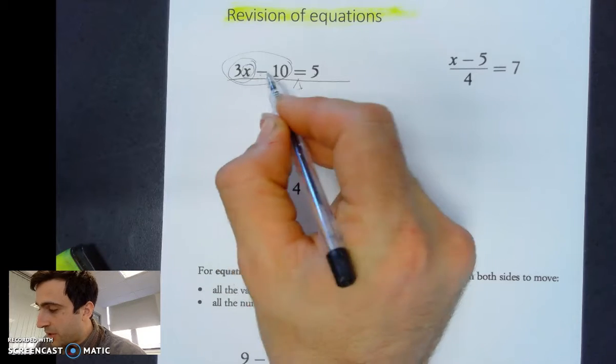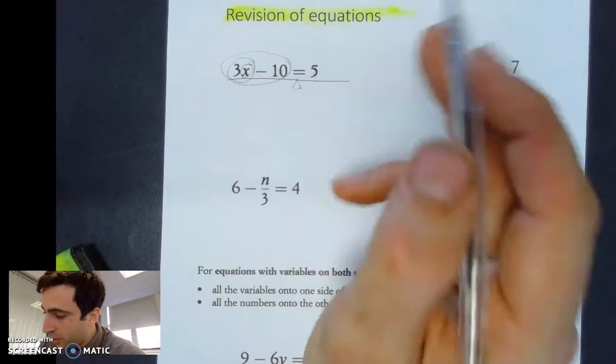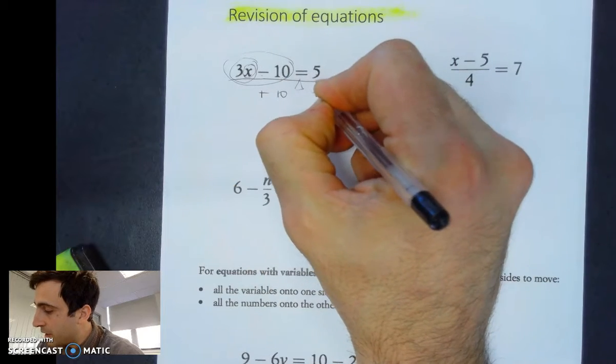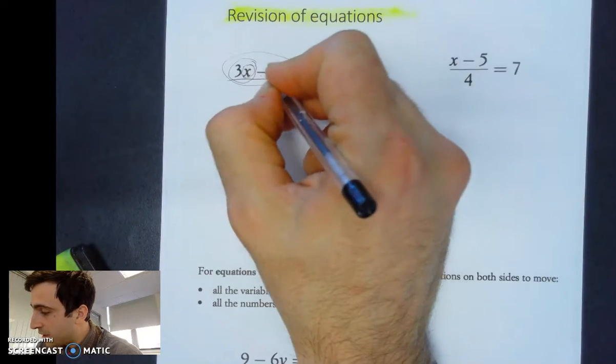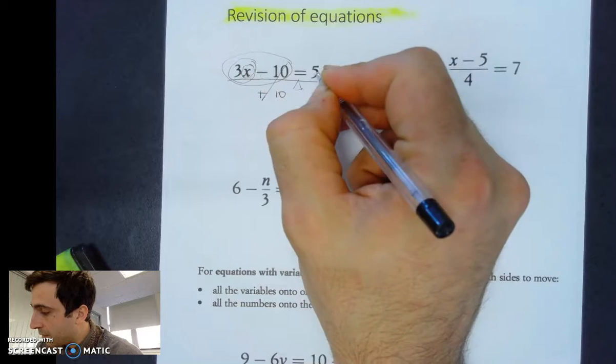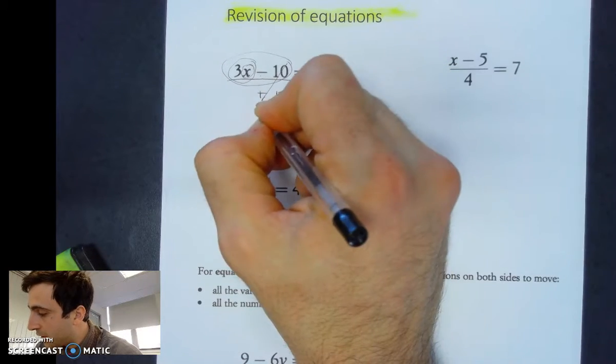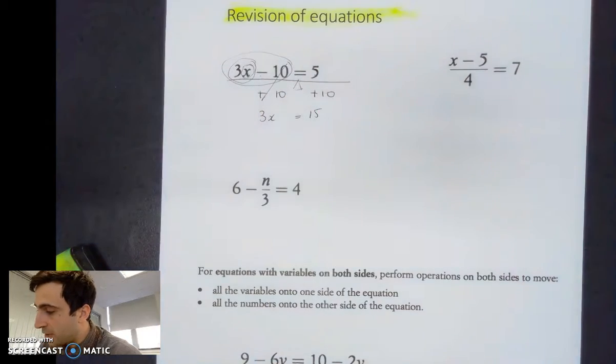So let's do it. This is minus 10. How do I get rid of minus 10? I do the opposite - I add 10. But what I do to one side I have to do to the other. So minus 10 plus 10 cancels out, 5 plus 10 is 15, and I end up with 3x equals 15 because that's gone now.